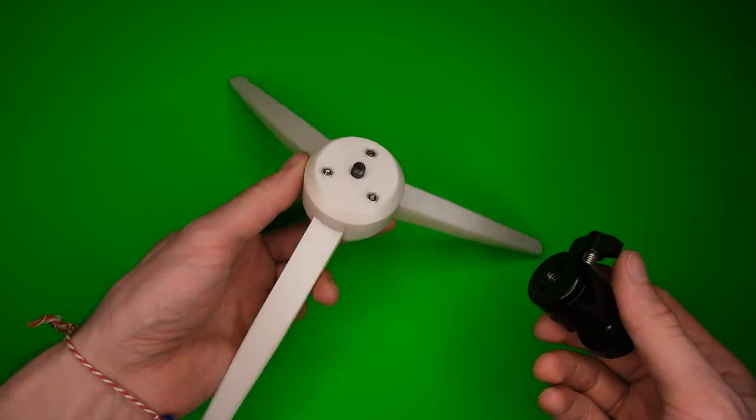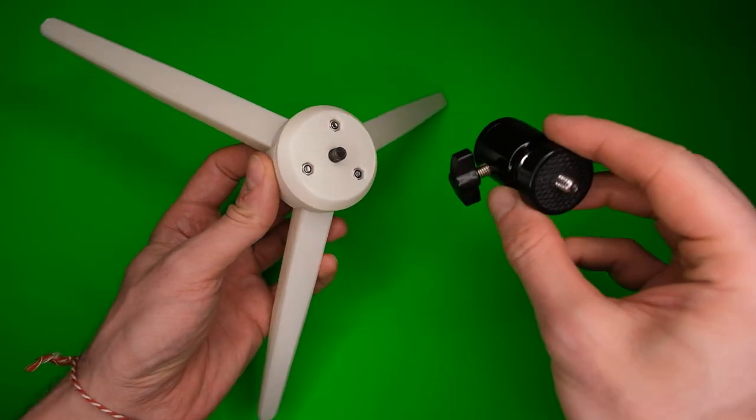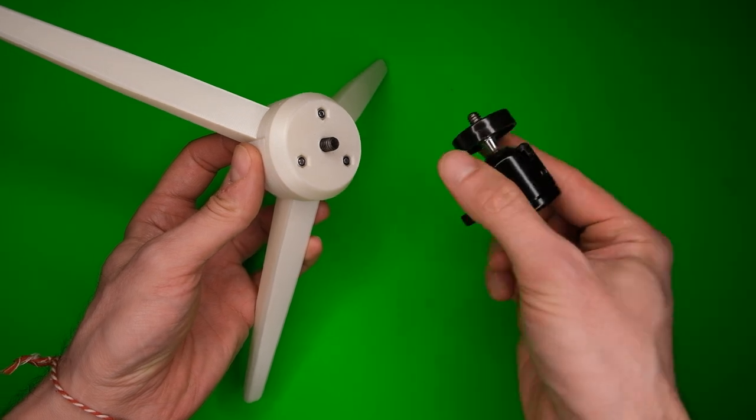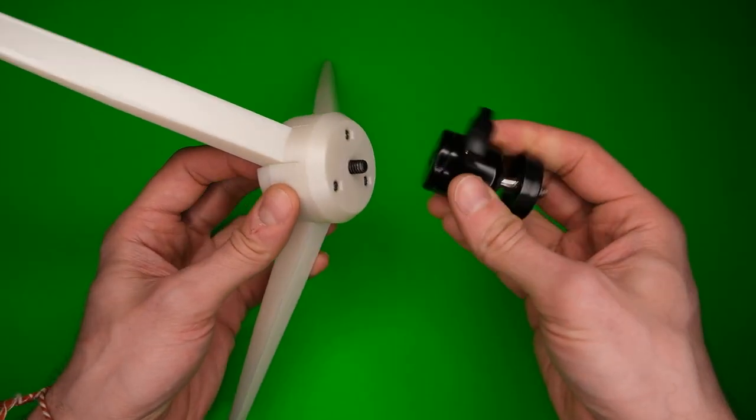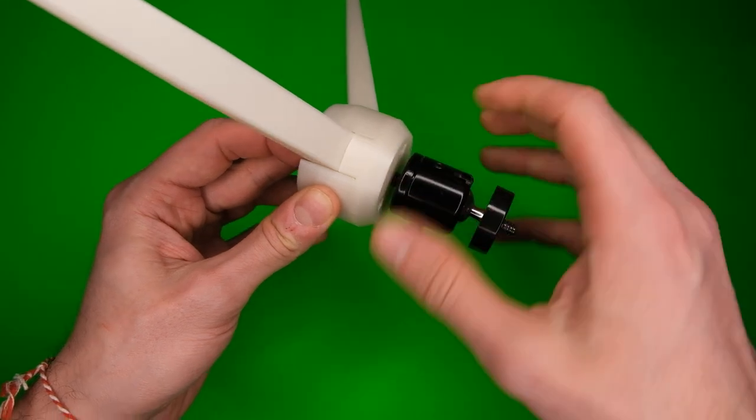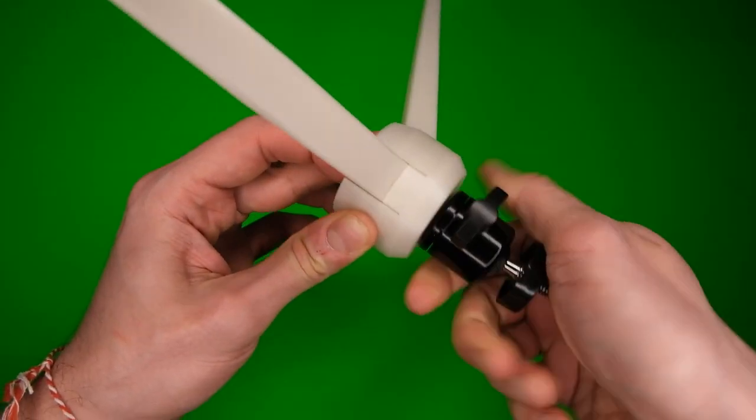And the tripod can also accept parts which probably should be made out of metal, like this ball and socket joint, which gives you a little bit of flexibility with positioning the device.